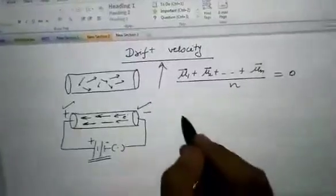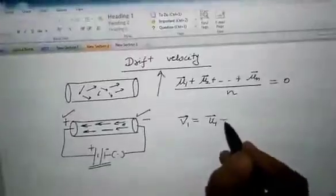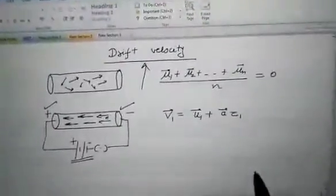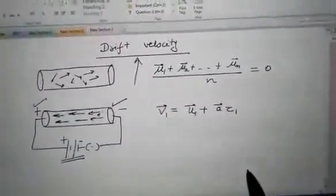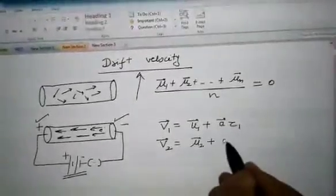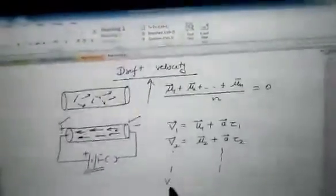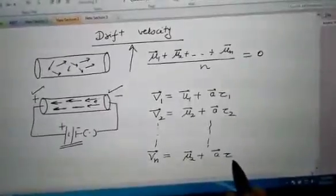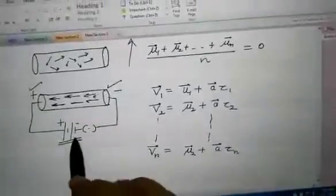If you see the first electron speed is v1 vector, that is u1 plus a vector into tau 1, where tau is the relaxation time, which is the time lapse between the two successive collisions. For the second electron we can write it as u2 plus a vector into tau 2, and similarly for the nth electron this will be un vector plus a vector into tau n. So a is the acceleration with which the electrons get drifted, which is opposite to that of the motion of the electron.